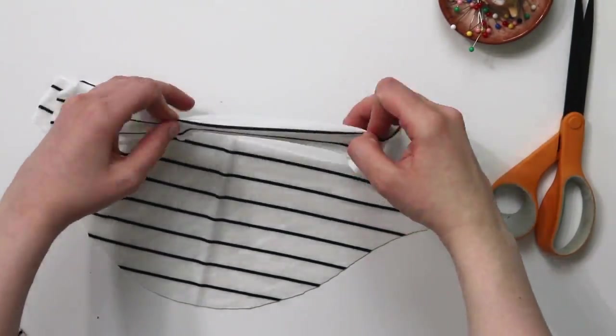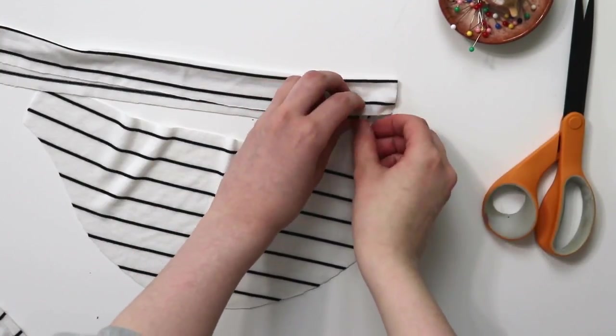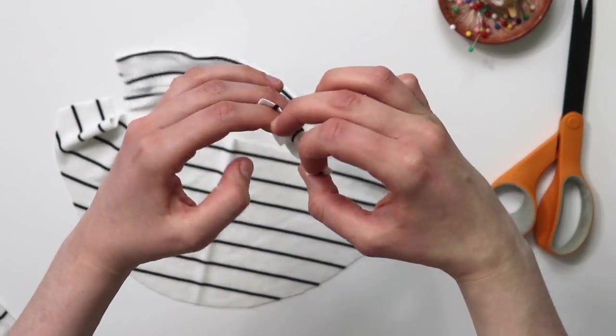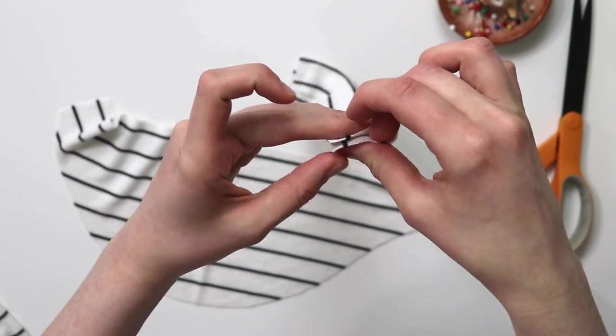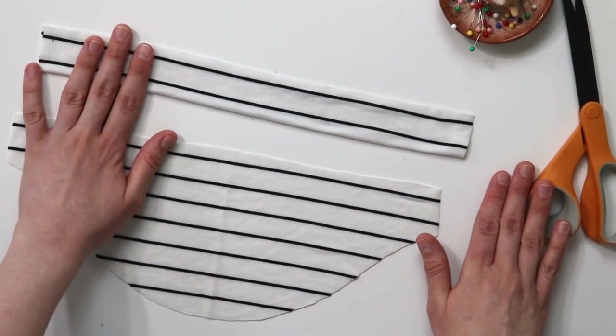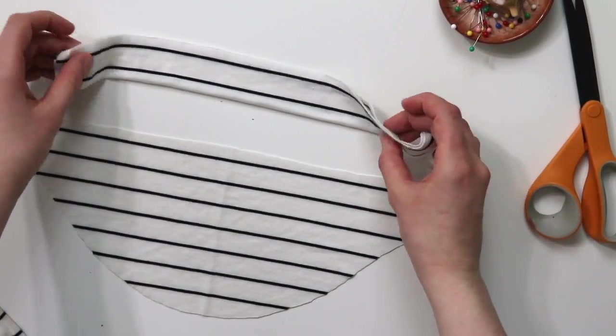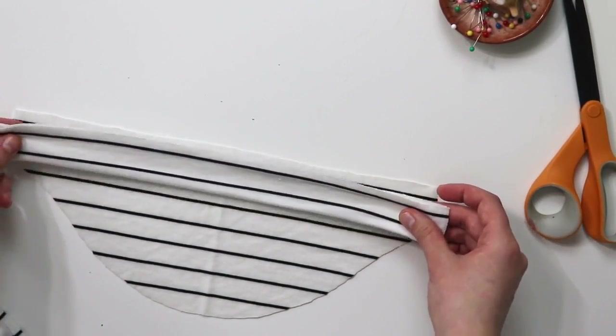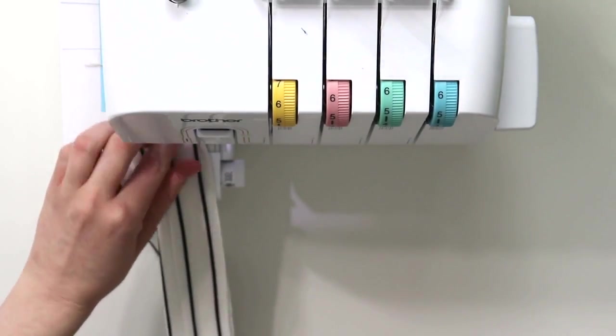I just did not want mine to be super bulky. You're going to cut your cuff and then fold it onto itself very neatly, and then place it on top of your sleeve. Now that it's pressed really nice and neatly, place it on top of your sleeve right sides together, and that's how you're going to sew it.